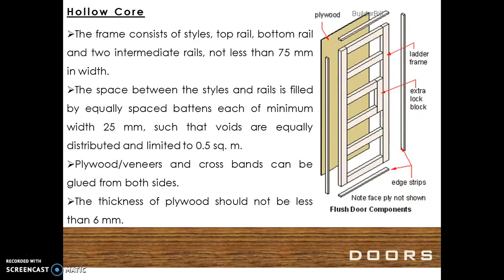Solid core doors provide better sound insulation and have less tendency to warp. Hollow core doors: the frame consists of styles, top rail, bottom rail, and two intermediate rails not less than 75 mm in width. The space between the styles and rails is filled by equally spaced battens, each of minimum width 25 mm, such that voids are equally distributed and limited to 0.5 square meters. Plywood or veneers and cross bands can be glued from both sides. The thickness of the plywood should not be less than 6 mm.